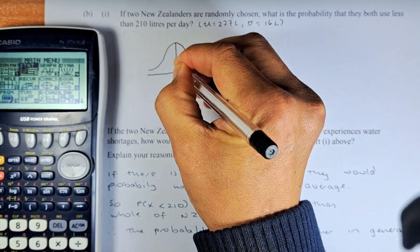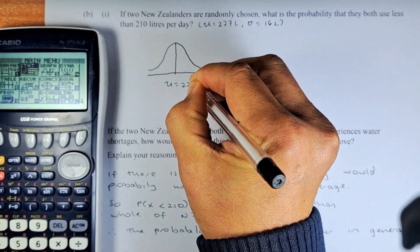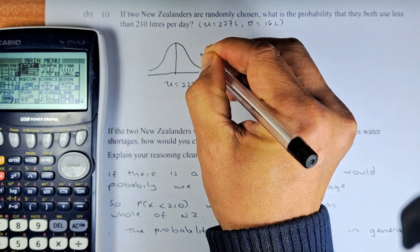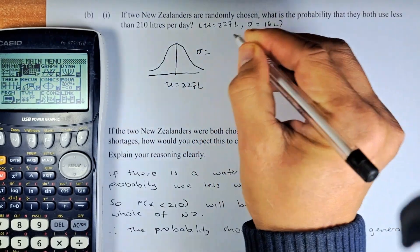So the mean in the middle here, represented by mu, equals to 227 litres. Sigma is the standard deviation, which is 16 litres.